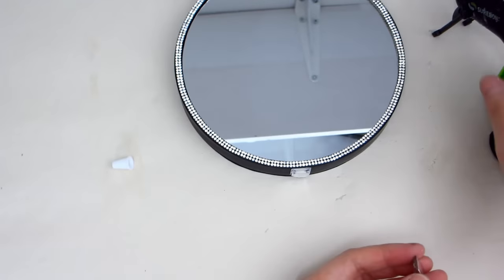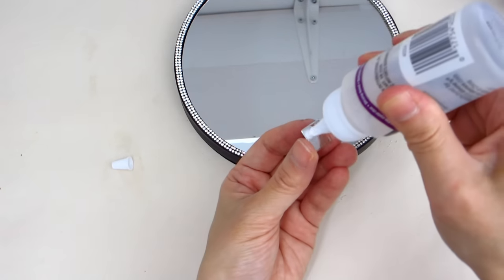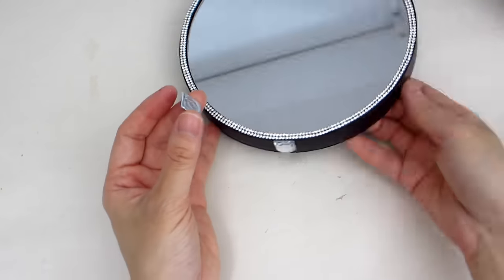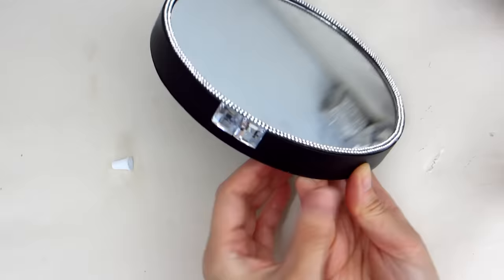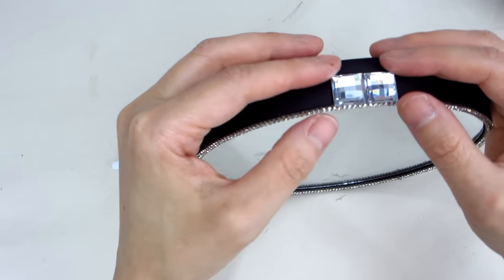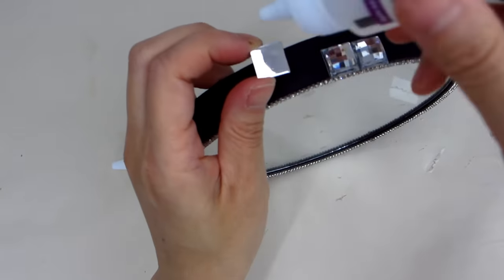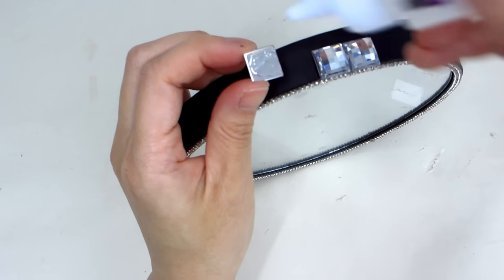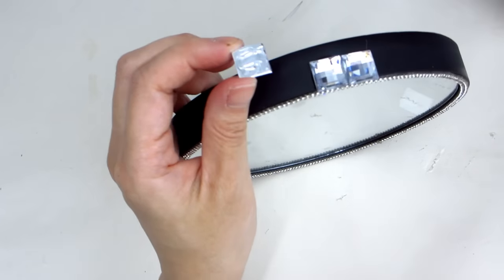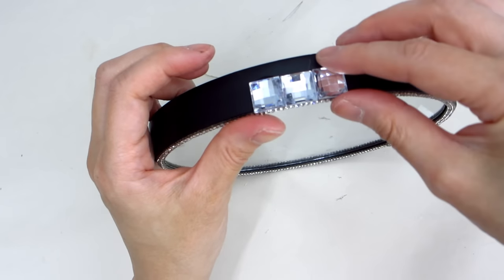On the sides of the frame, I'm going to add some loose flat-backed square gems as well. Instead of hot glue, we're going to apply some clear tacky glue to adhere the gems to the frame. I find the tacky glue doesn't dry as fast as the hot glue, so it gives me enough time to make adjustments if I need to reposition the gems.